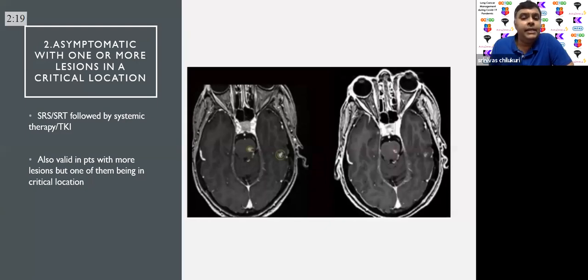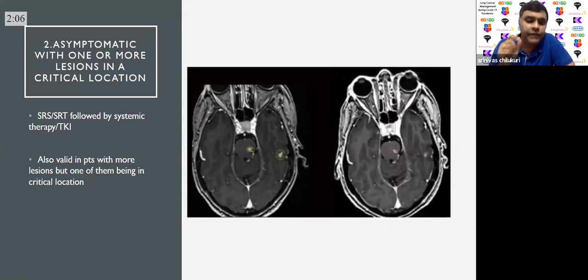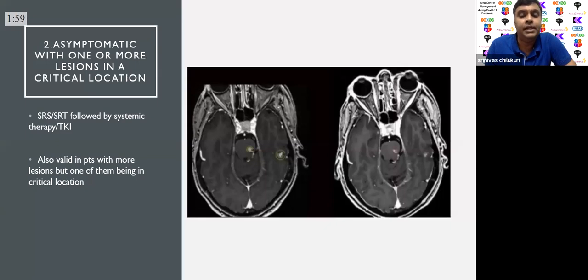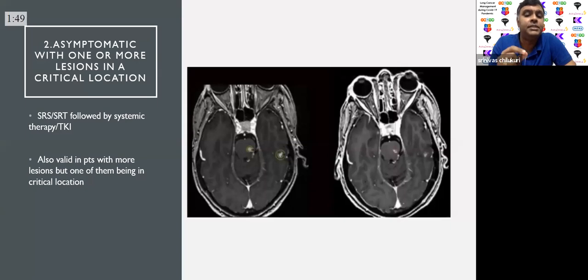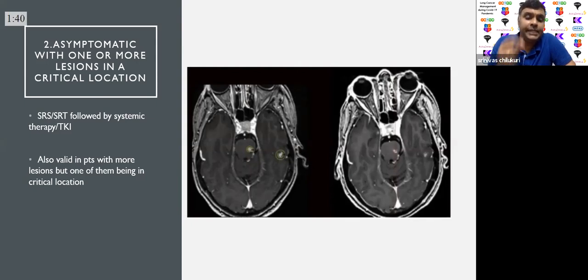If a patient is not very symptomatic but has metastasis in a critical location — for example, brainstem metastasis — the volume may be small and amenable to systemic therapy alone, but given the critical location it is advisable to treat such patients with radiosurgery. If you want to avoid treating other locations, you would at least treat the one in the critical location. This approach is also valid in patients with more lesions if one of them is in a critical location.